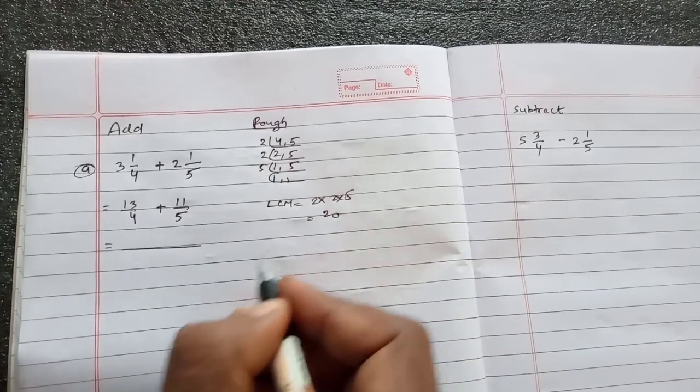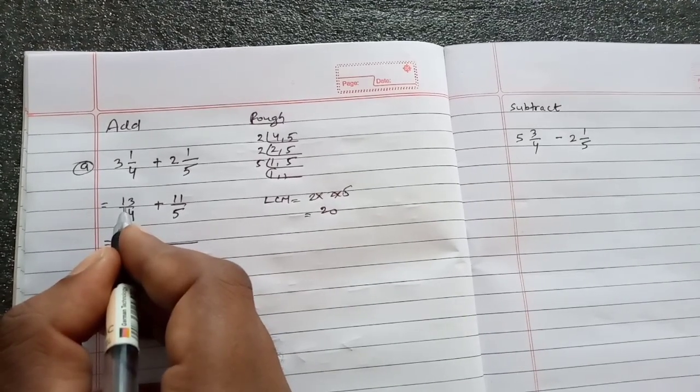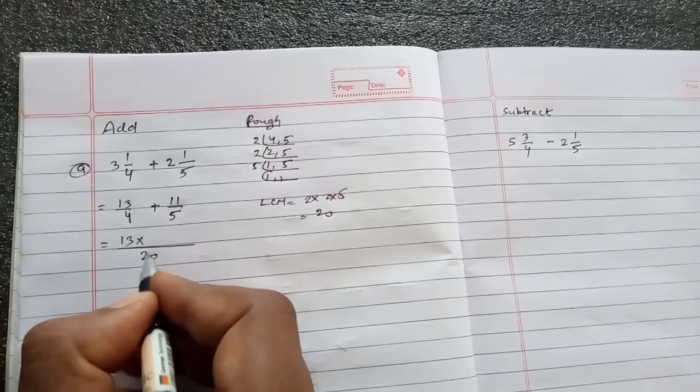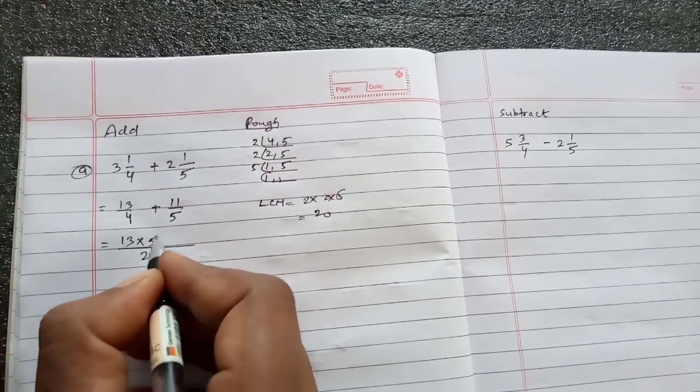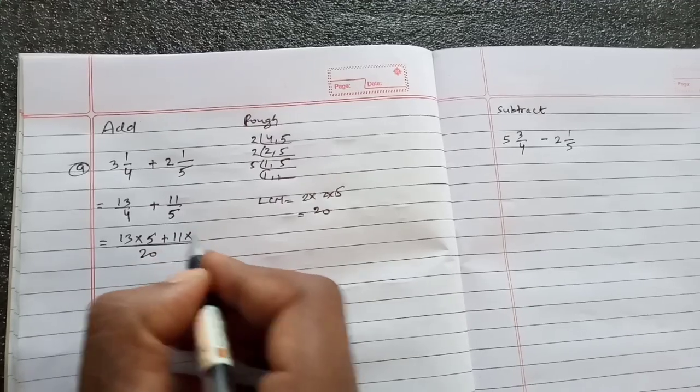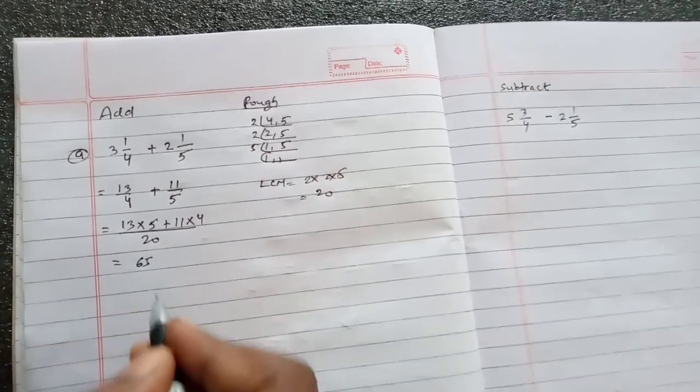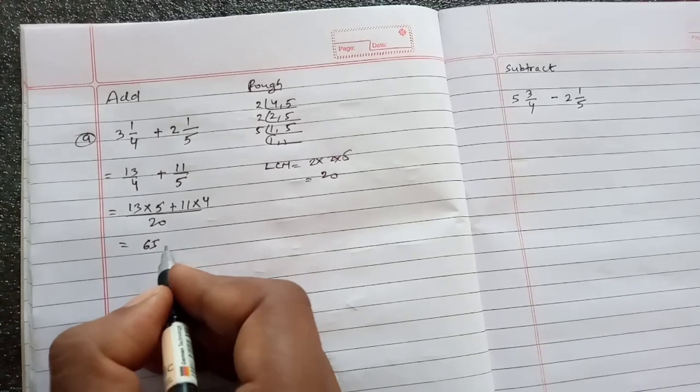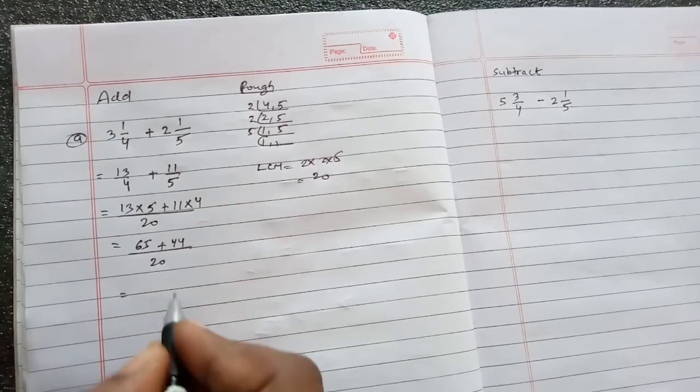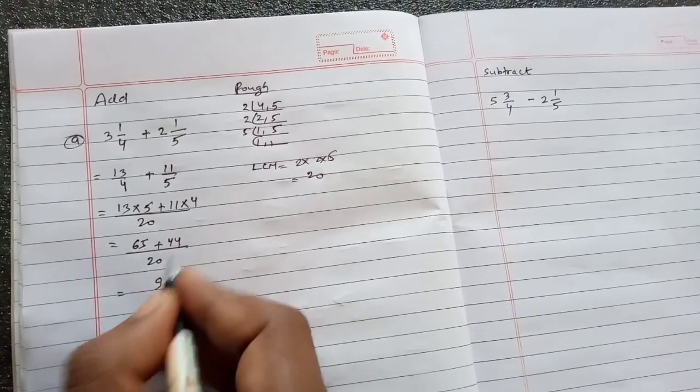Then here, now write 13. 4 into how much is 20? 4 into 5 is 20, so 13 times 5 is 65. Plus 11, 5 into how much is 20? 5 into 4 is 20, so 11 times 4 is 44. Let's add them: 65 plus 44. 5 plus 4 is 9, 6 plus 4 is 10. So 109/20.